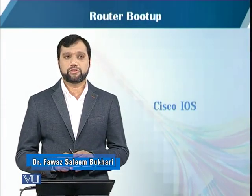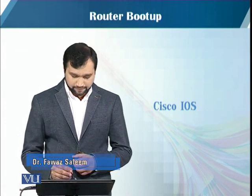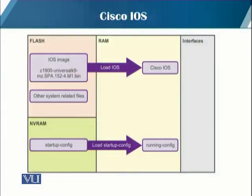Let's talk about the router boot-up process and Cisco IOS. As shown in the figure, a router loads the following two files into RAM when it is booted. The first file is an IOS image file. The IOS facilitates the basic operation of the device hardware components. The IOS image file is stored in flash memory.